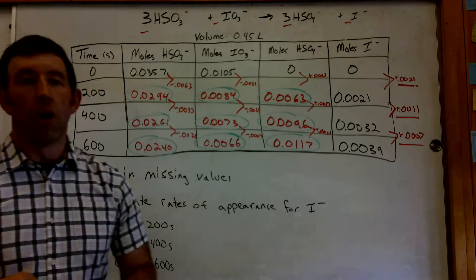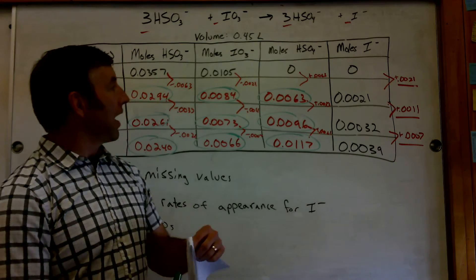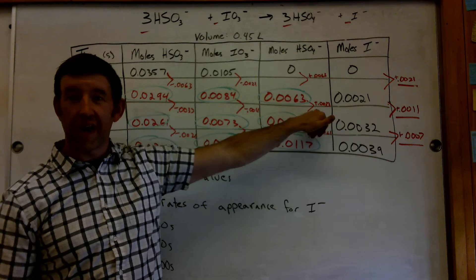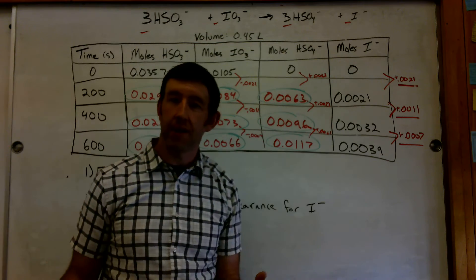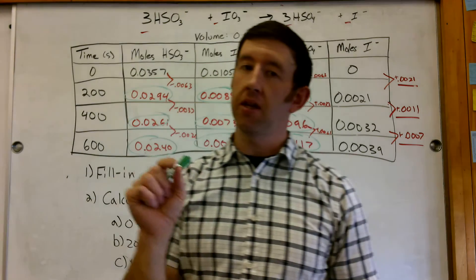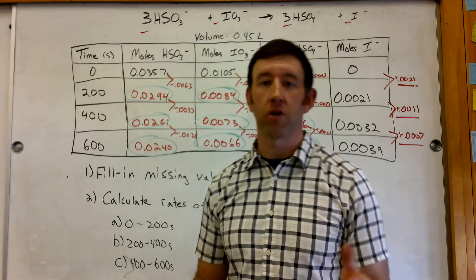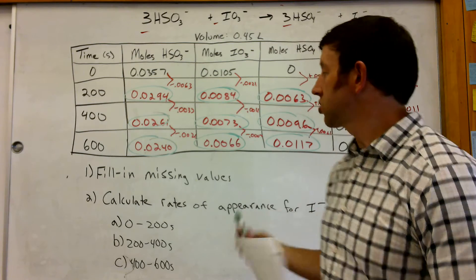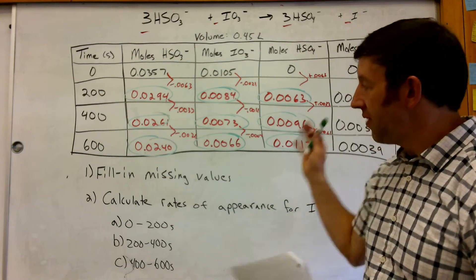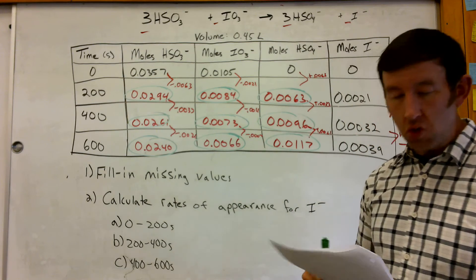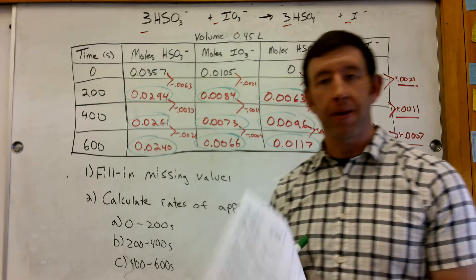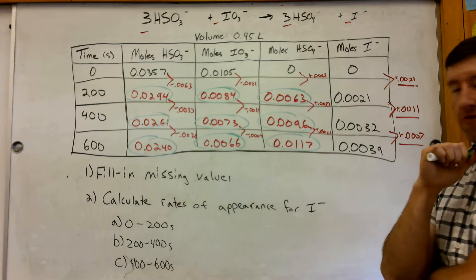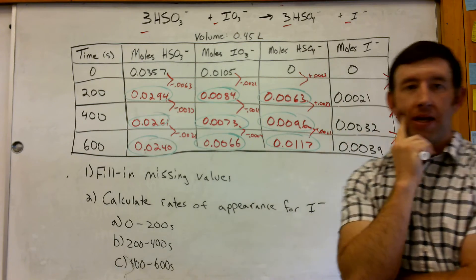You don't have to put these little annotations in there showing what you're adding or subtracting by — that's not a necessity, I just did this to illustrate what's happening. So now, number two on that page: we want to calculate our rates of appearance and disappearance — specifically rates of appearance for the iodine ion.